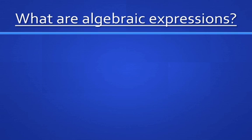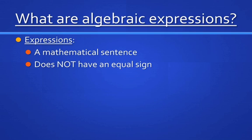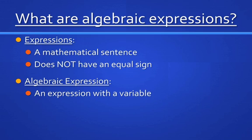What are algebraic expressions? First of all, an expression is a mathematical sentence, and it does not have an equal sign. Be very careful — a lot of people have heard the word equation and think expressions and equations are the same thing, but they're not. Expressions do not have an equal sign at all. An algebraic expression is just like an expression but with a variable. It doesn't have just numbers like standard numerical expressions; it includes a variable. That's what makes it algebraic.